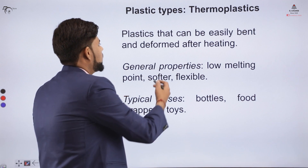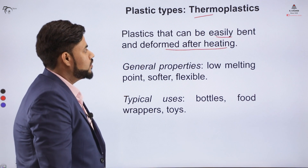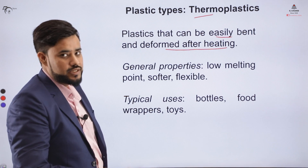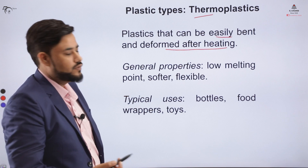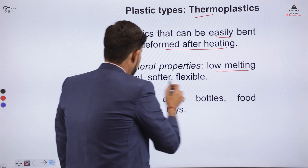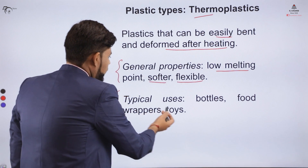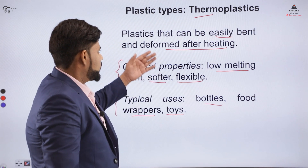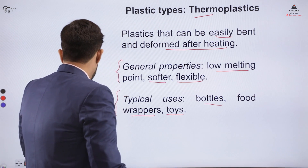The third category is thermoplastics, which can be easily bent and deformed after heating. You can heat these plastics and change or deform them into a new shape. They have a low melting point, are generally softer and flexible, and are used for bottles, food wrappers, or toys. So we have three categories: thermoplastics, elastomers, and thermosets.